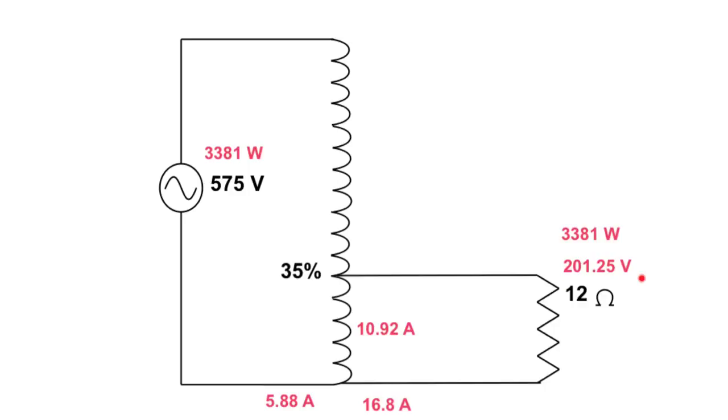Then I can take this voltage times this current to get this power. VA in is equal to VA out, so we can take that power and move it over to here. We take this power, which is the same, divided by that voltage to get that current. And then we take this current and that current, and we subtract them from each other to get the current across the common winding.